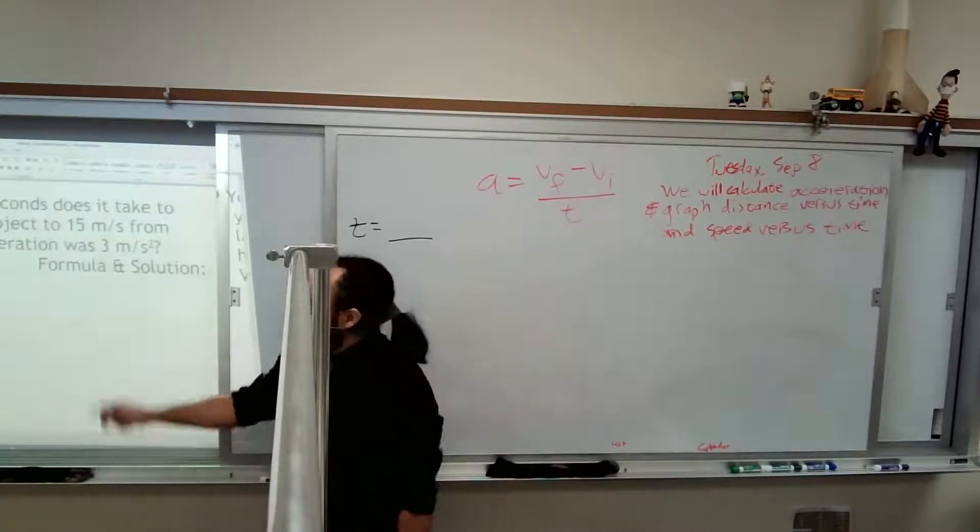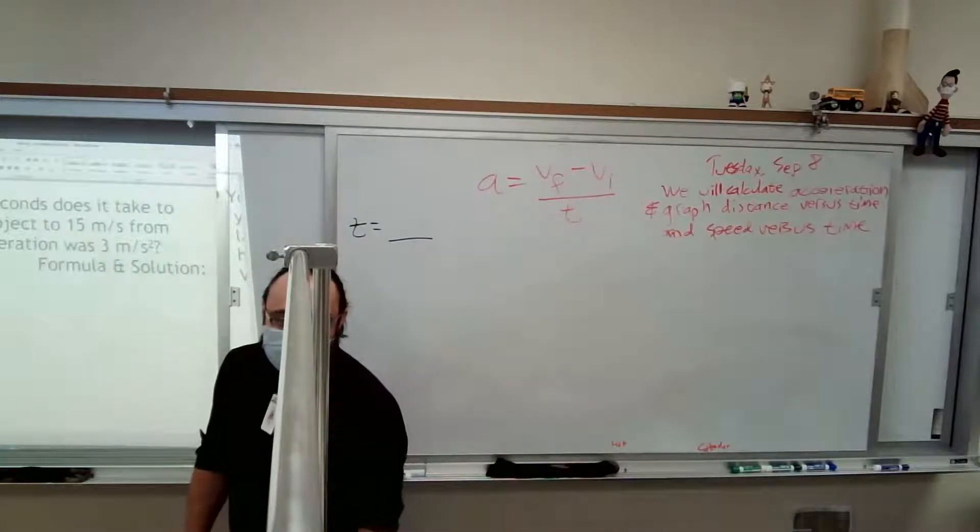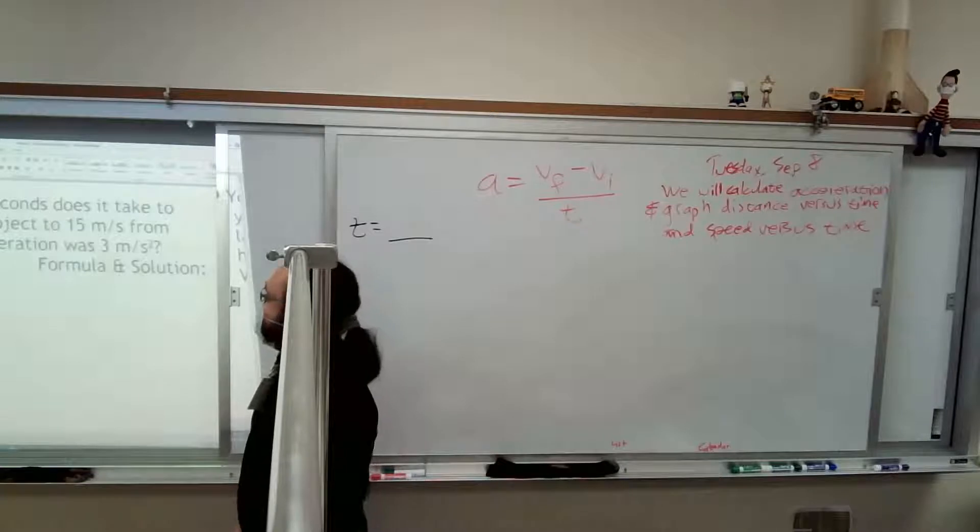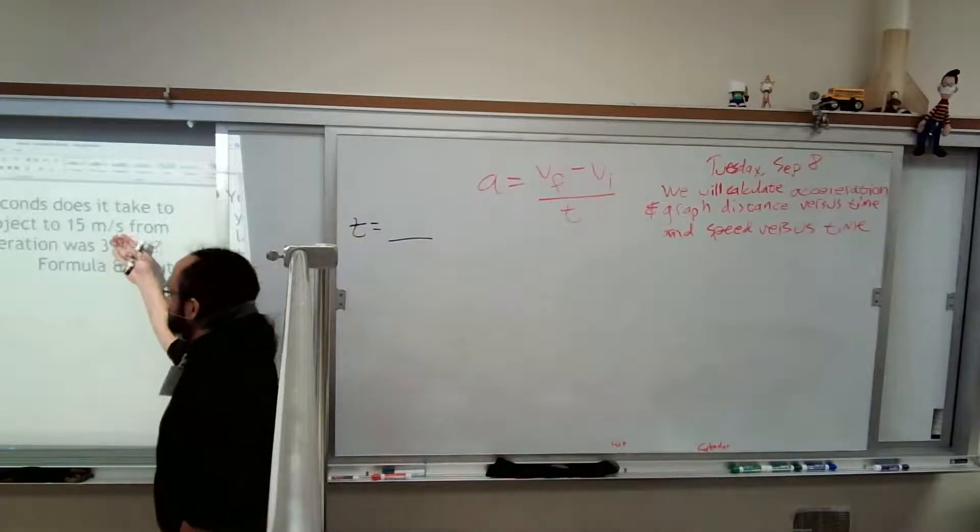What's the unit for acceleration? Meters per second squared. This says just meters per second. It's possible that I messed this up and didn't put the squared on there, but in this case I did not. This is what it's meant to be. So this is a velocity.